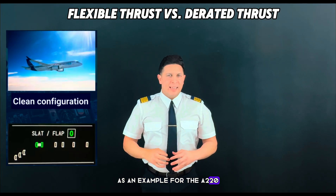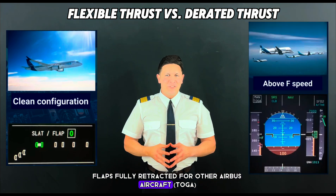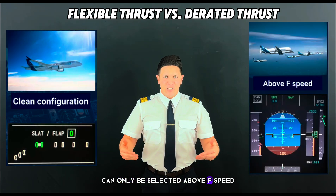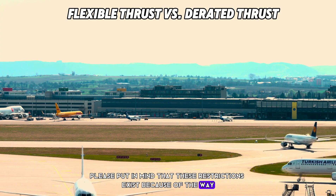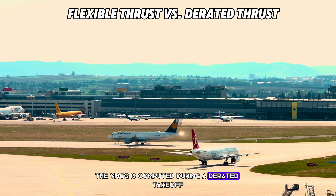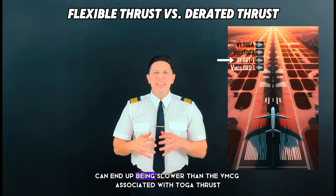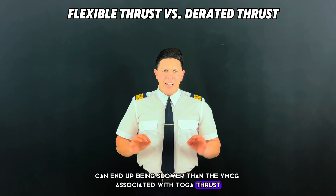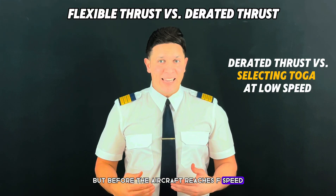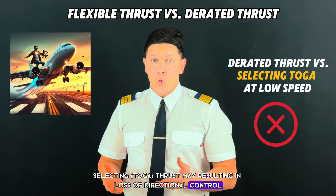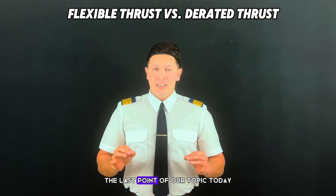TOGA thrust can only be selected once the aircraft reaches a specific speed. For example, on the A220, this is when the aircraft reaches its clean configuration speed — flaps fully retracted. For other Airbus aircraft, TOGA can only be selected above F speed, which is the speed where the flaps can begin to retract. These restrictions exist because of the way VMCG is computed during a derated takeoff. By lowering the VMCG during a derate, the actual V1 decision speed can end up being slower than the VMCG associated with TOGA thrust. If an engine failure occurs after V1 but before the aircraft reaches F speed, selecting TOGA thrust may result in loss of directional control, as the aircraft won't have enough control authority to handle the higher thrust setting safely.